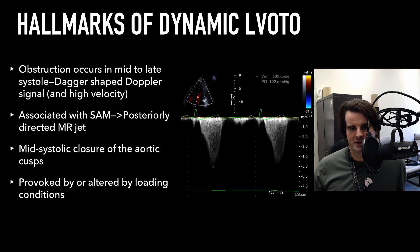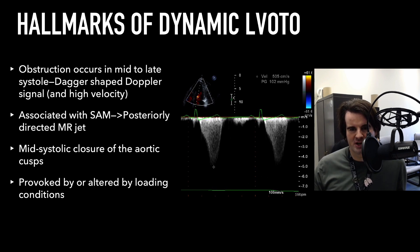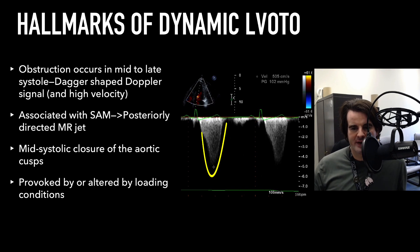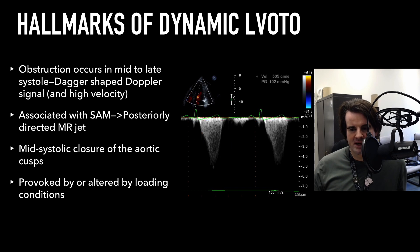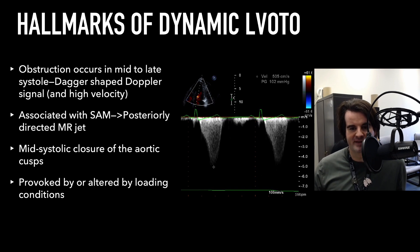Let's explore the advanced approach. The hallmark of dynamic obstruction is this mid- to late-peaking dagger shape on continuous wave Doppler, because these are very high velocities. We see a concave-to-the-left configuration — rather than a big parabolic waveform, it's scooped out. This is because there's progressive acceleration of blood flow as it tries to escape the ever-tightening grip of the outflow tract.